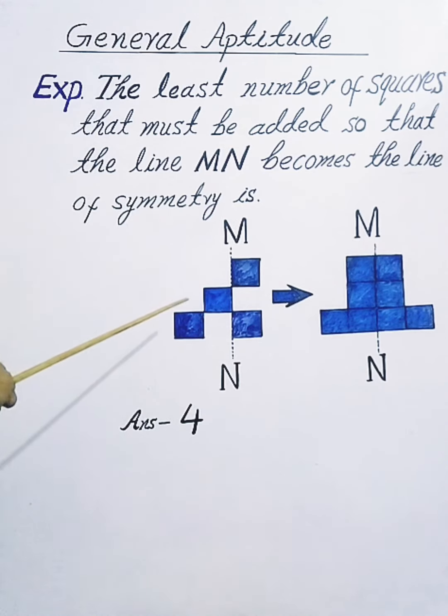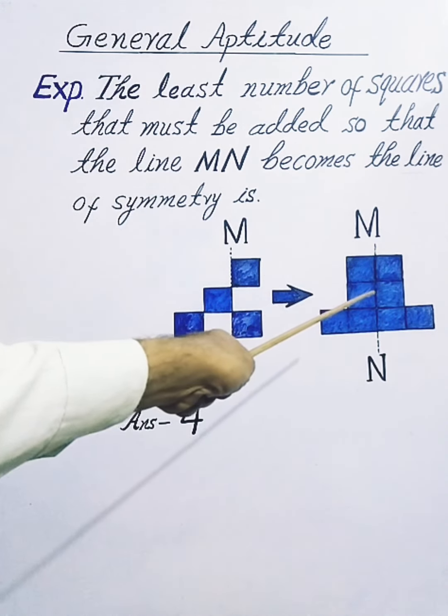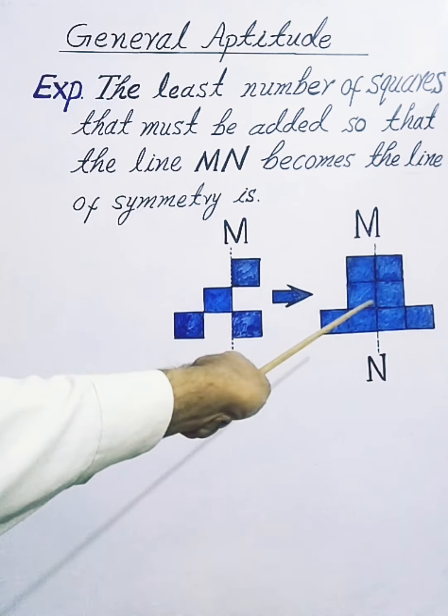To make both sides symmetric, we have to add one square here, one here, one here, and one here. Total four squares we have to add, and the new diagram, the line of symmetry is here in right-hand side.